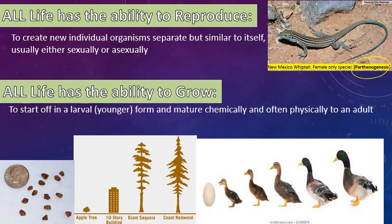The other trait that students usually remember alongside reproduction is that all life has the ability to grow — to start off in a younger, often larval form and mature chemically and often physically into an adult form. Here are the seeds of a coastal redwood, the largest tree in the world, and you can see the size here is nothing compared to the size of the adult tree. Growth is the natural ability of life to develop from a larval state to a more adult state, which is usually when they become capable of reproduction.